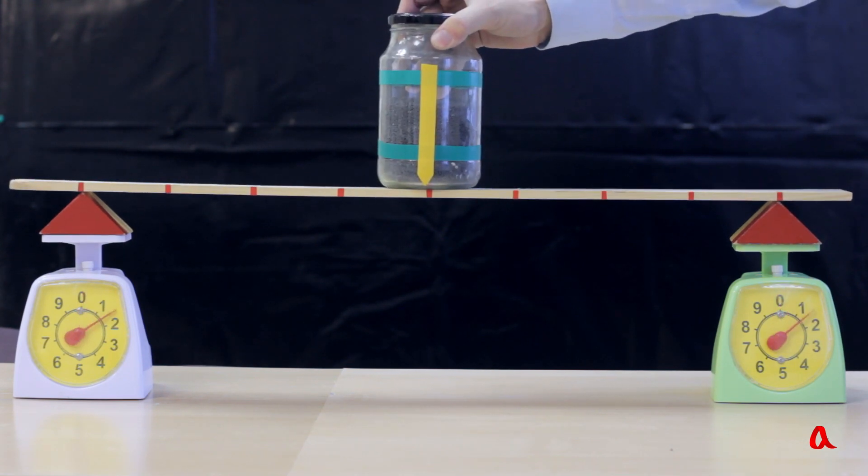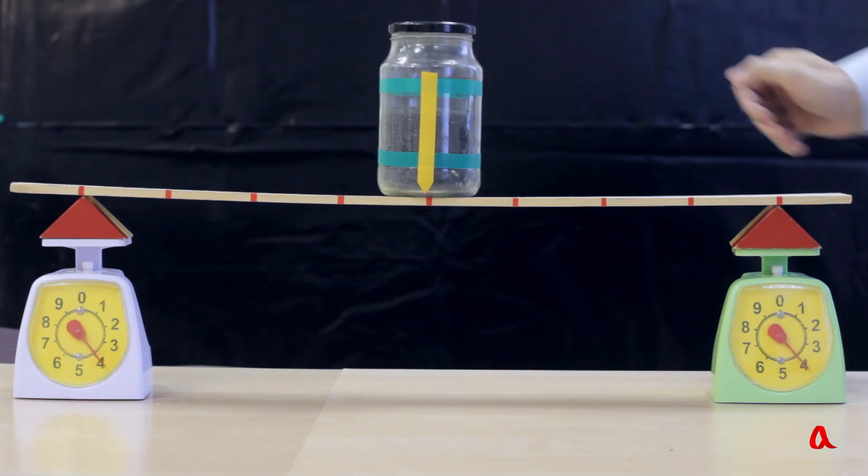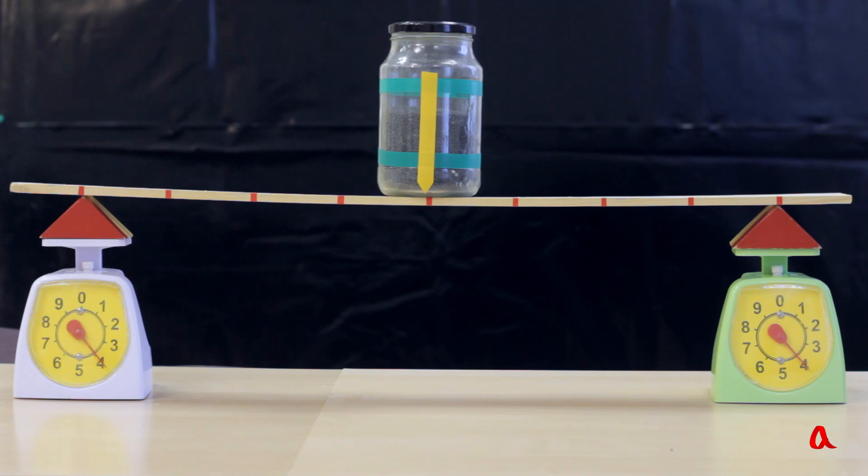We place it in the middle of the beam. Both scales point to 4 units. Just as we could expect, both supporting points are loaded equally.